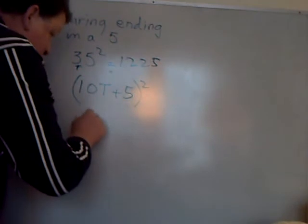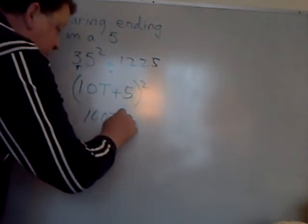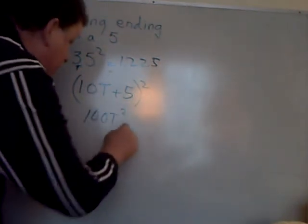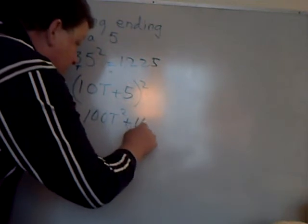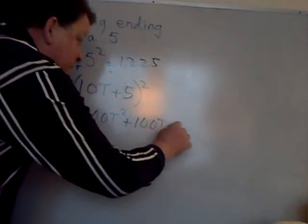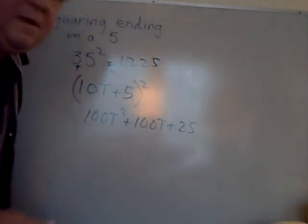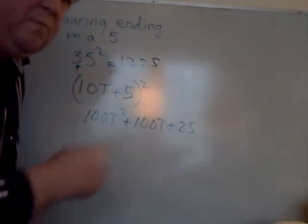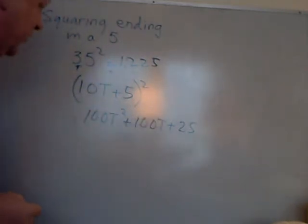Now when you square this out, you get 100t squared, plus 100t, plus 25. Using FOIL or whatever method you've been taught to square that.